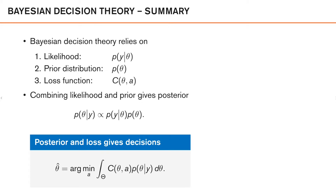In Bayesian decision theory, there are three important components: the likelihood, the prior, and the cost function, or loss function. Using the first two — the likelihood and the prior — we can compute the posterior distribution. And given the posterior distribution, we can make decisions by minimizing the posterior expected loss. So this summarizes the basic strategy in Bayesian decision theory.